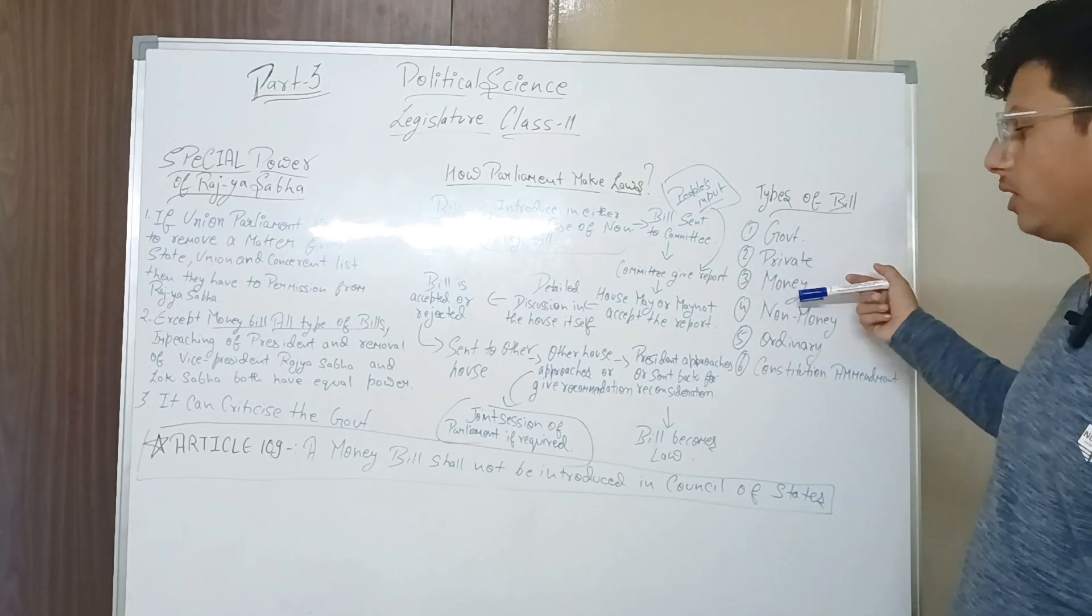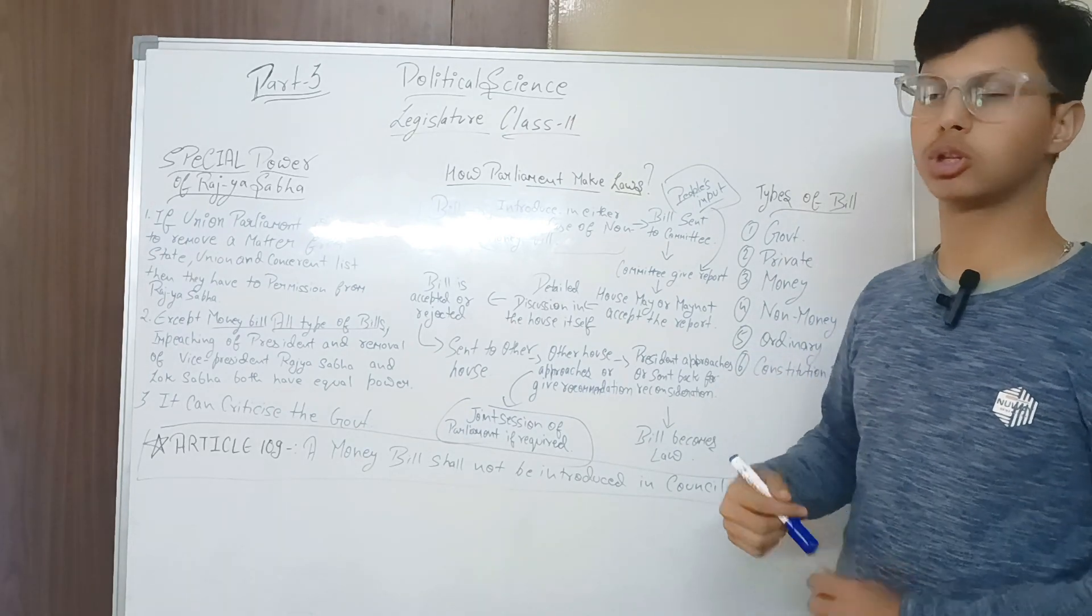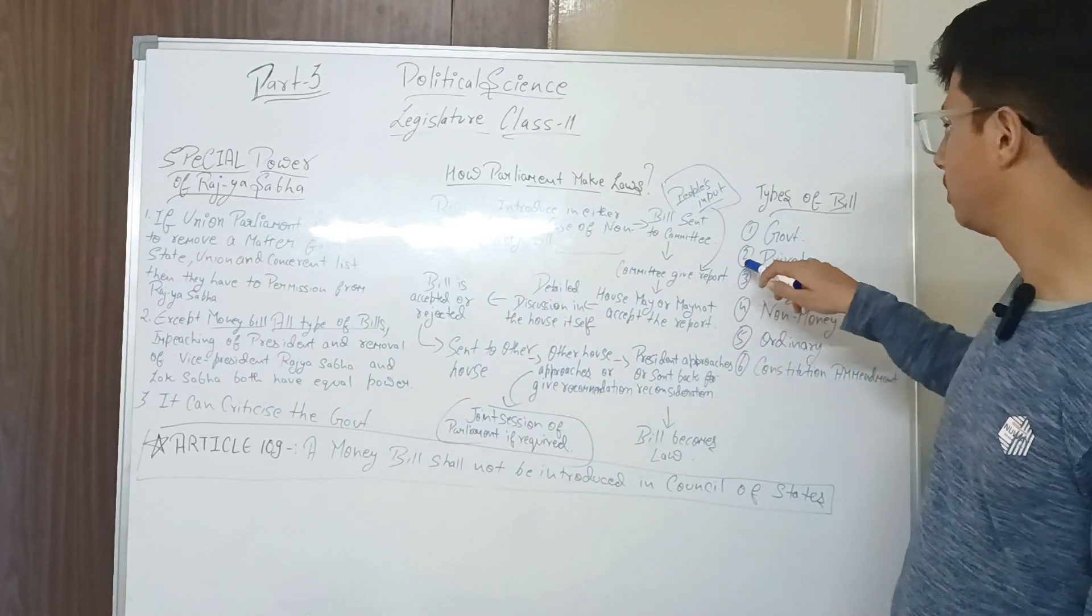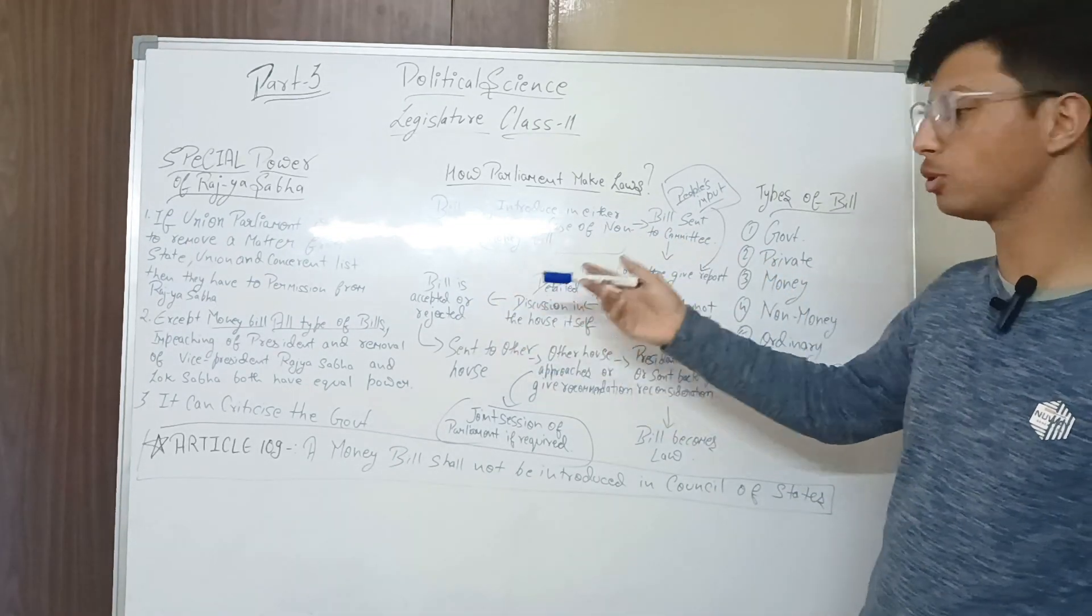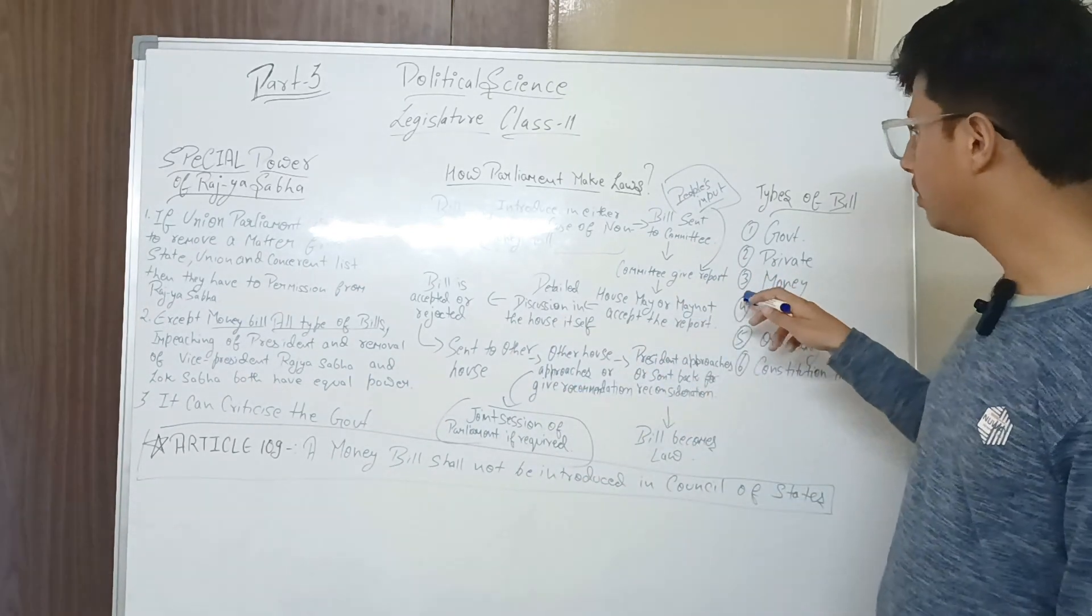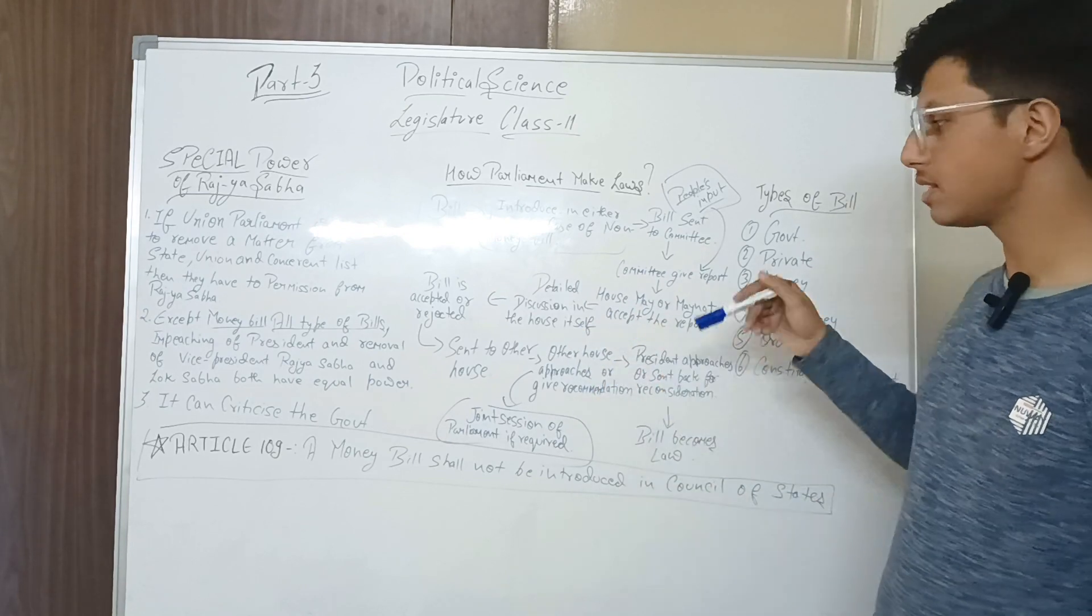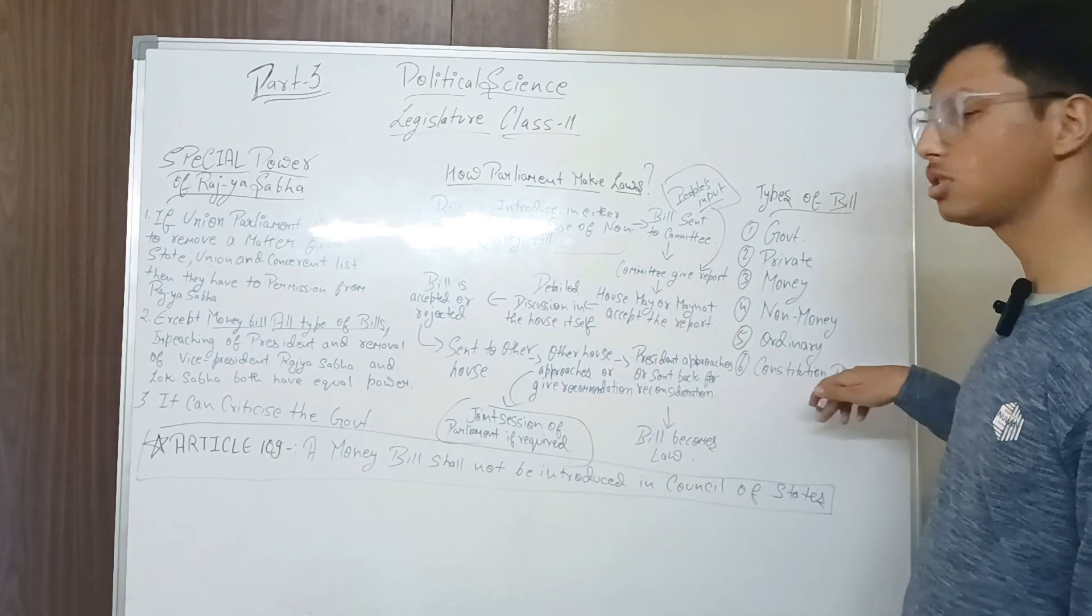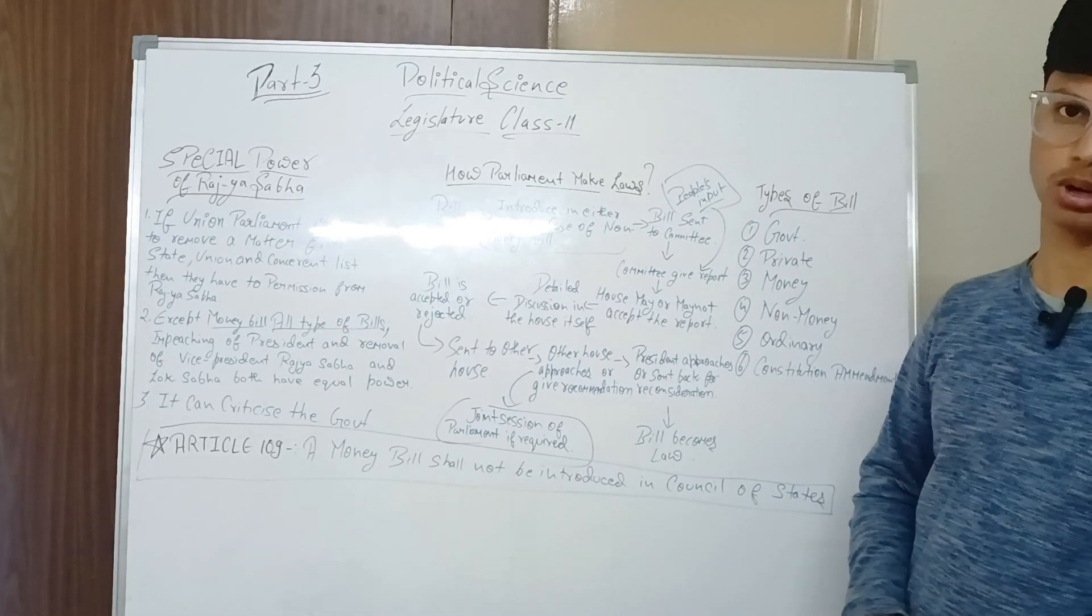Bills are of 6 types: government, private, money, non-money, ordinary, and constitutional amendments. Government bill: if I have authority and I want to introduce a bill, that's a government bill. Private bill: if I am private and I introduce a bill or give opinion to government to make a bill, that's a private bill. Money bill: finance-related bills. Non-money bill: bills not related to finance. Ordinary bills: simple bills for simple rules and laws. Constitutional amendments: these are the biggest bills till now. How many constitutional amendments have happened till now? This is all covered in Article 109.